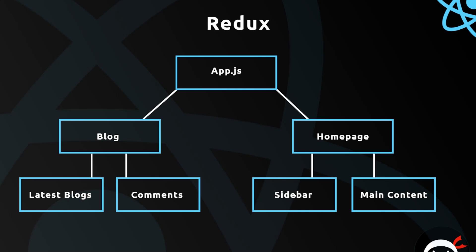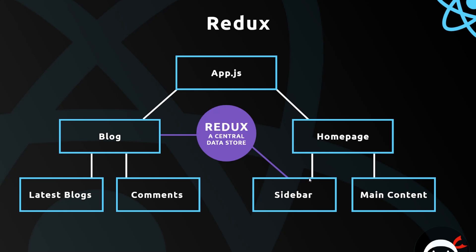But what about the sidebar? We could do the same thing — reach out in the Home page, get that data, store it in state, and pass it down as props — but we're duplicating our code, so probably not the best method. Or we could come up with some convoluted way to pass the data up and around into the sidebar, which is again very convoluted. So enter Redux, which is a central data store where we can keep all the data that needs to be shared between components.